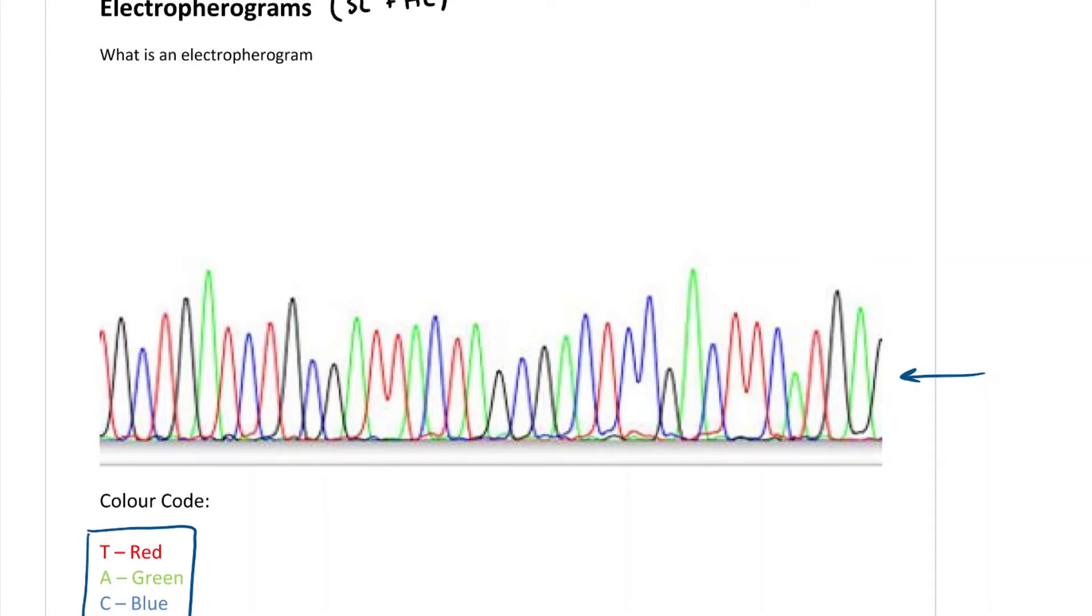And so an electropherogram is just a plot, a graphical representation of results from an analysis. And if you are a standard level student, it may not be a bad idea to go watch the last video on DNA sequencing and just watch the last bit where I talk about the running of the gel electrophoresis and how we obtain this electropherogram.